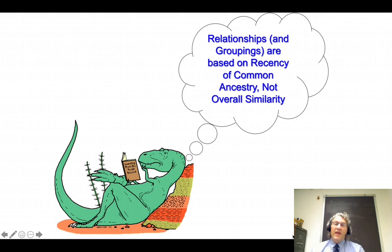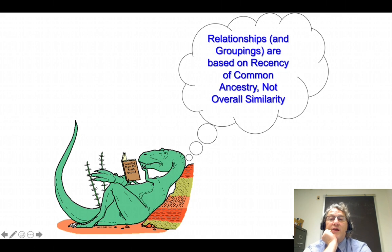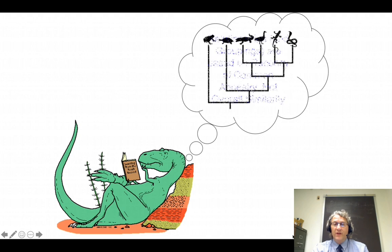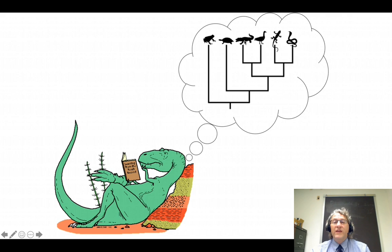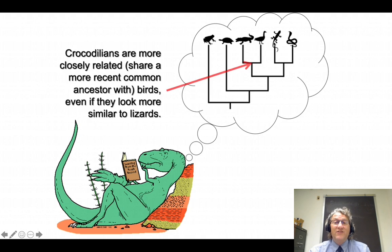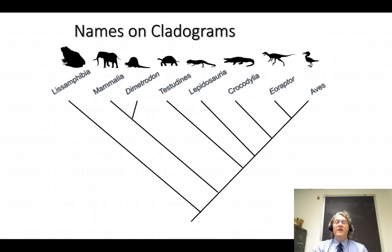Remember that in a cladogram or phylogenetic tree, the relationships and groupings shown are based on patterns of recency of common ancestry, and not on overall similarity. For instance, on this cladogram we can see that crocodilians like an alligator are closer to a duck — that is, share a more recent common ancestor with a duck — than they do with a lizard, even though grossly speaking a lizard and a crocodile look more similar to each other.